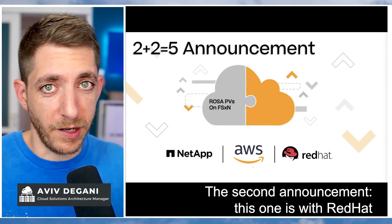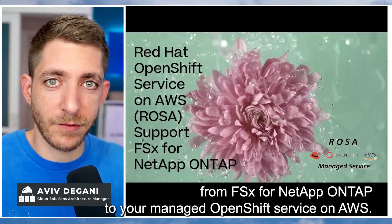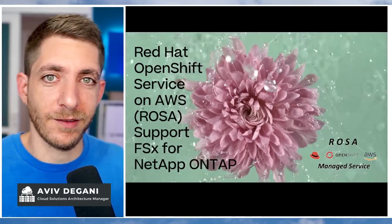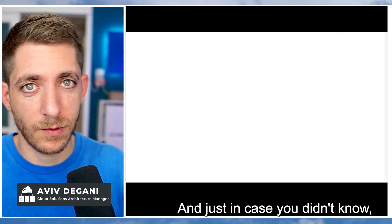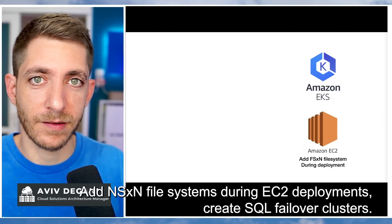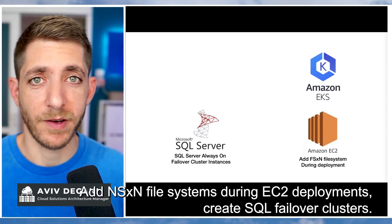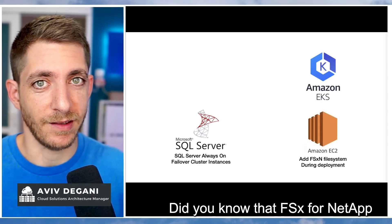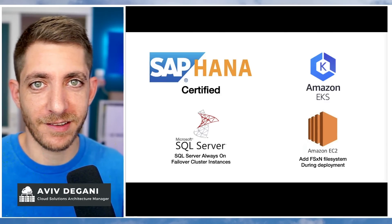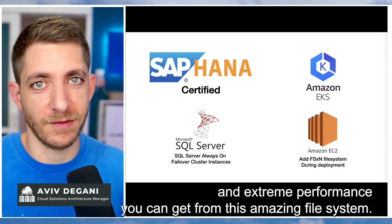This one is with Red Hat. You can start provisioning persistent volumes from FSx for NetApp ONTAP to your managed OpenShift service on AWS. And just in case you didn't know, you can also provision persistent storage for EKS clusters, add NFS and file systems during EC2 deployments, and create SQL failover clusters. Did you know that FSx for NetApp ONTAP is also SAP HANA certified? That alone proves the low latency and extreme performance you can get from this amazing file system.